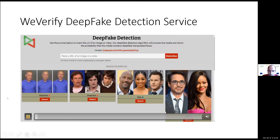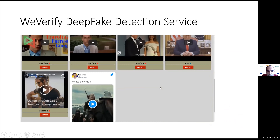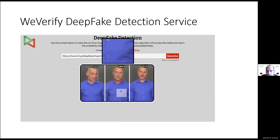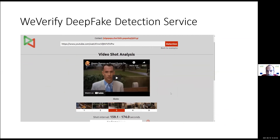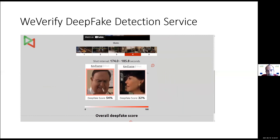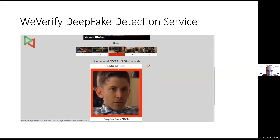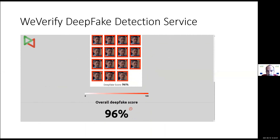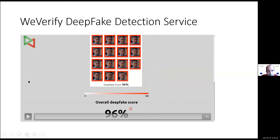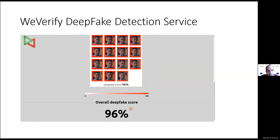Here is a sneak preview of how it looks. This is our own interface where you can select an image and see the detected faces and the deepfake score for each of them. You can also enter videos — there is shot segmentation, and for each shot you can see the detected faces. For each face, you can see the deepfake detection score in red if it is high, in white if it is low, and you can see each face in successive keyframes.